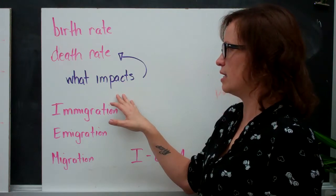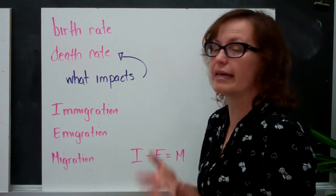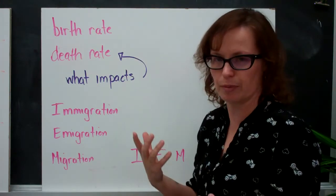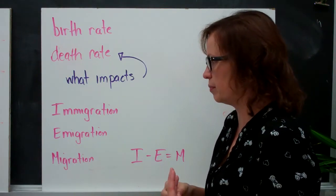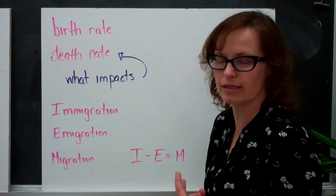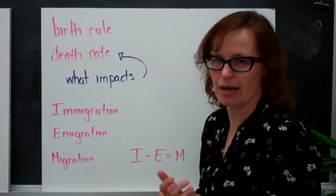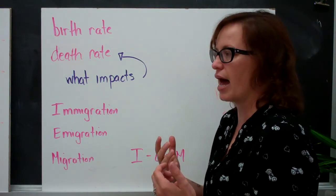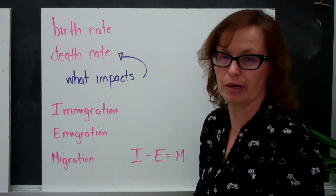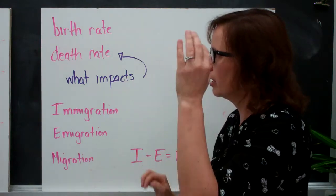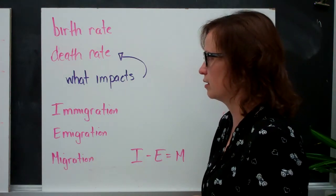Now, sometimes there can be incidents that greatly impact the death rate and increase it exponentially over a couple of years. That could be war, that could be major catastrophes, natural disasters, or it could be an epidemic, some sort of serious illness that causes a large number of people to die in a very short period of time. So that could impact your death rate.